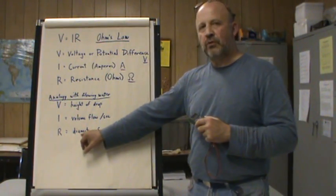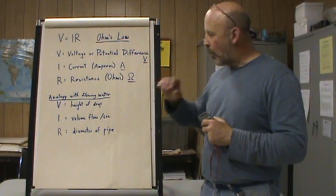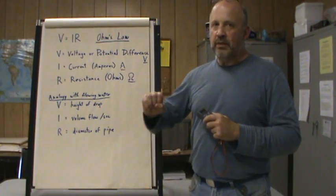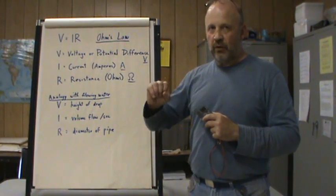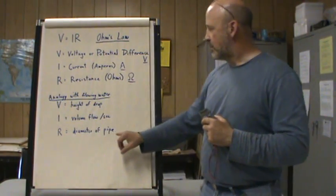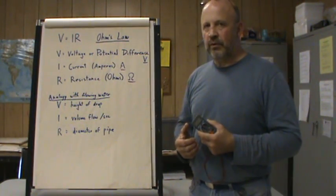Current is similar to volume of flow per second, because in fact current is measured in a number of electrons passing a certain point per second. It's a very big number but it's been transformed into amps which is a much simpler number to work with. Resistance would be similar to the diameter of a water pipe through which water is flowing. So the smaller the diameter, the harder it is for water to flow, so that's greater resistance.